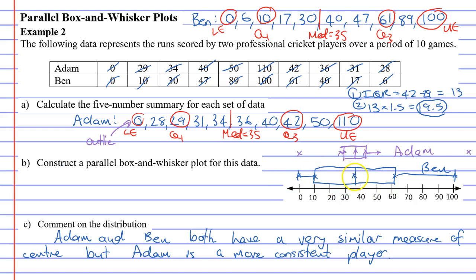Ben is not so consistent. He gets really large scores and really low scores as well. He's got the same central measure as Adam, so he gets around 35 runs as well. But you don't know if he's going to come out and score 100, or score 0, or score 10. There's no guarantee that he's going to get a score around 35. So we say that Adam is a more consistent player. I think we'll finish there. See you later.